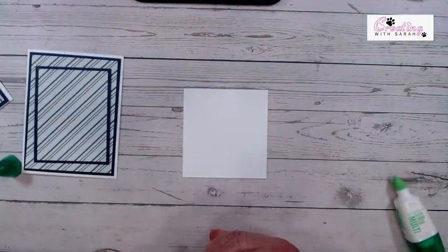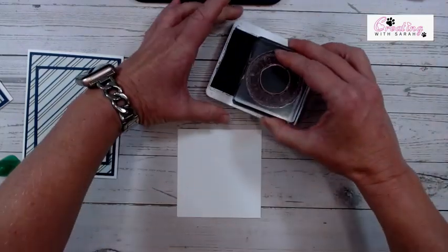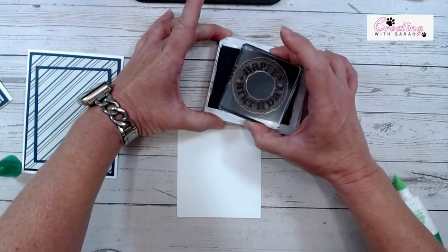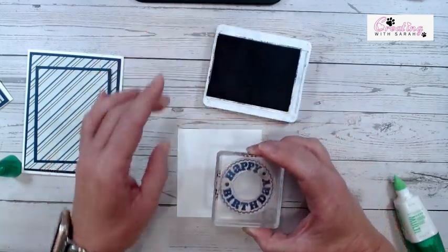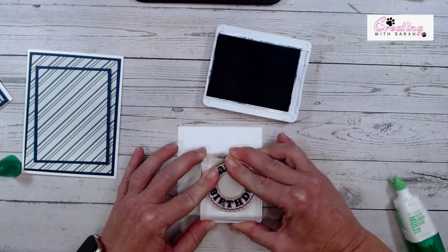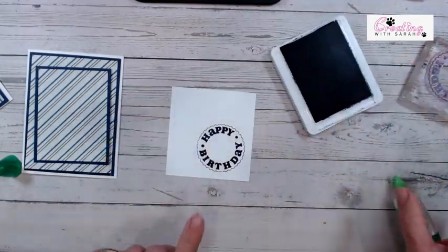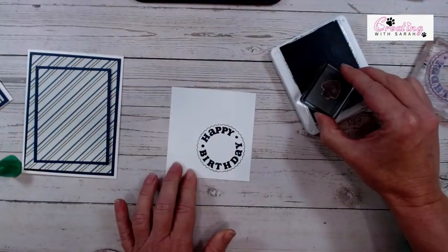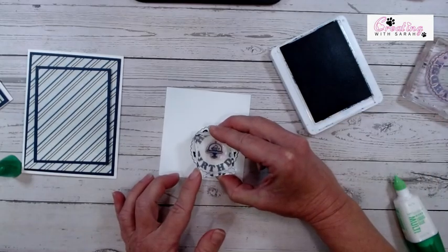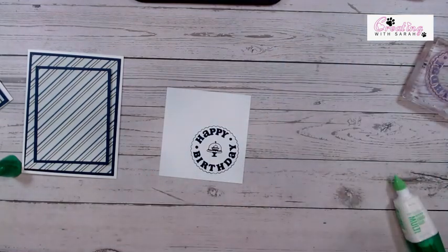So this I'm going to go ahead and glue down, but I'm not going to glue it to the card base just yet. Let's do a little bit of stamping. So I brought in my Night of Navy. And I just reinked it. So hopefully I didn't reink it too much. But I really need to just go through and reink all of my ink pads. So I stamped the happy birthday, and then I'm going to come in and stamp the cupcake in the center.